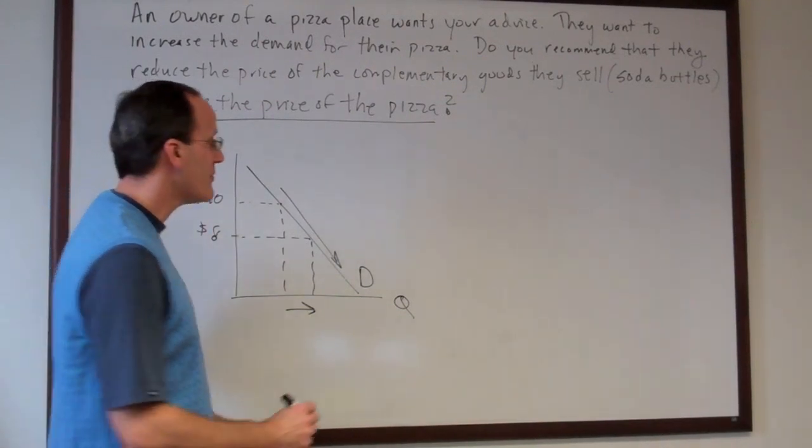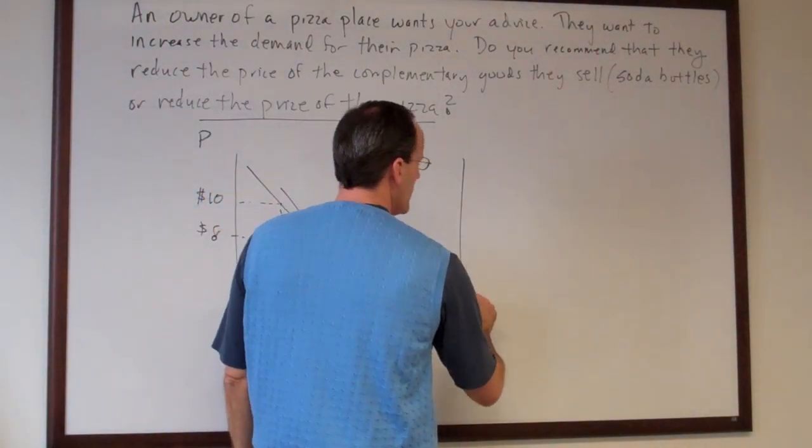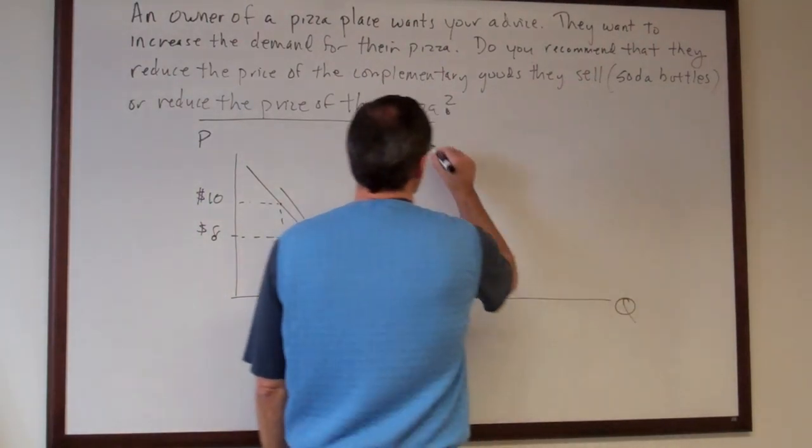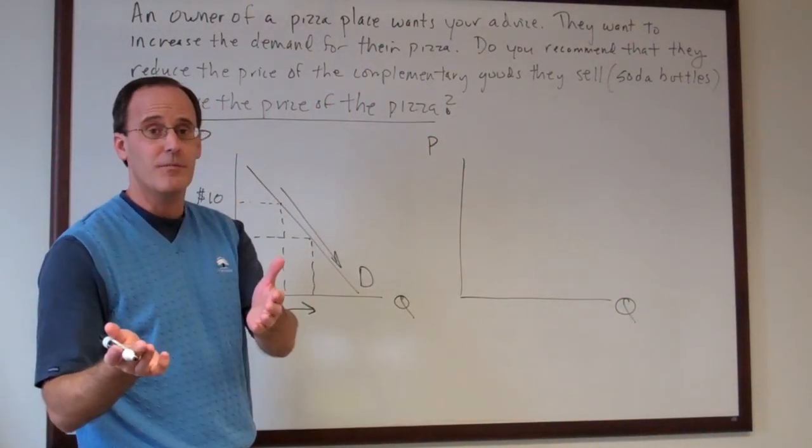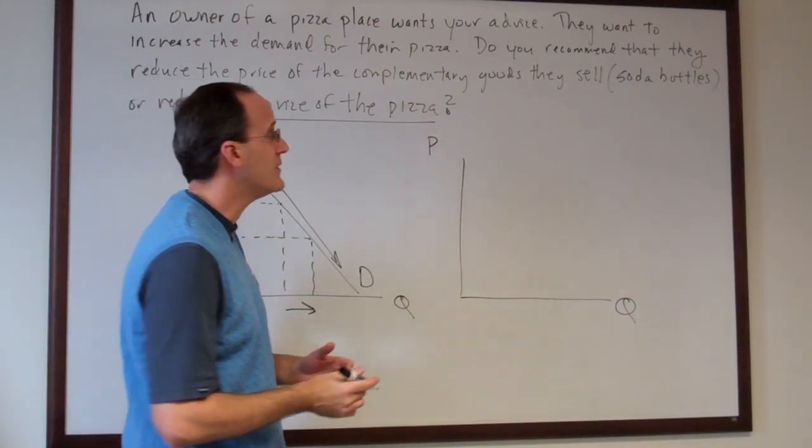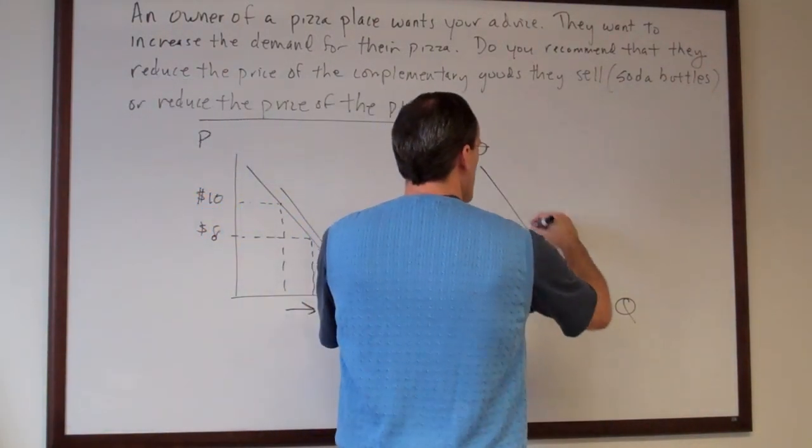Turns out there's only one right answer here. And the one right answer is to reduce the price of the complementary good, which is the two liter soda. So let's think about how that works.